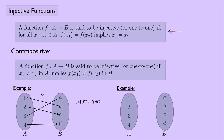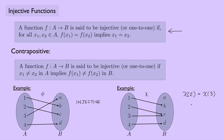Take the same sets a and b. Now define a function chi that maps one to b, two to c, three to c, and four to d. Is this injective? Now we see the problem, and it has to do with the element c. Chi(2) equals c, and chi(3) also equals c, so chi(2) equals chi(3). But two does not equal three. So this is not injective.